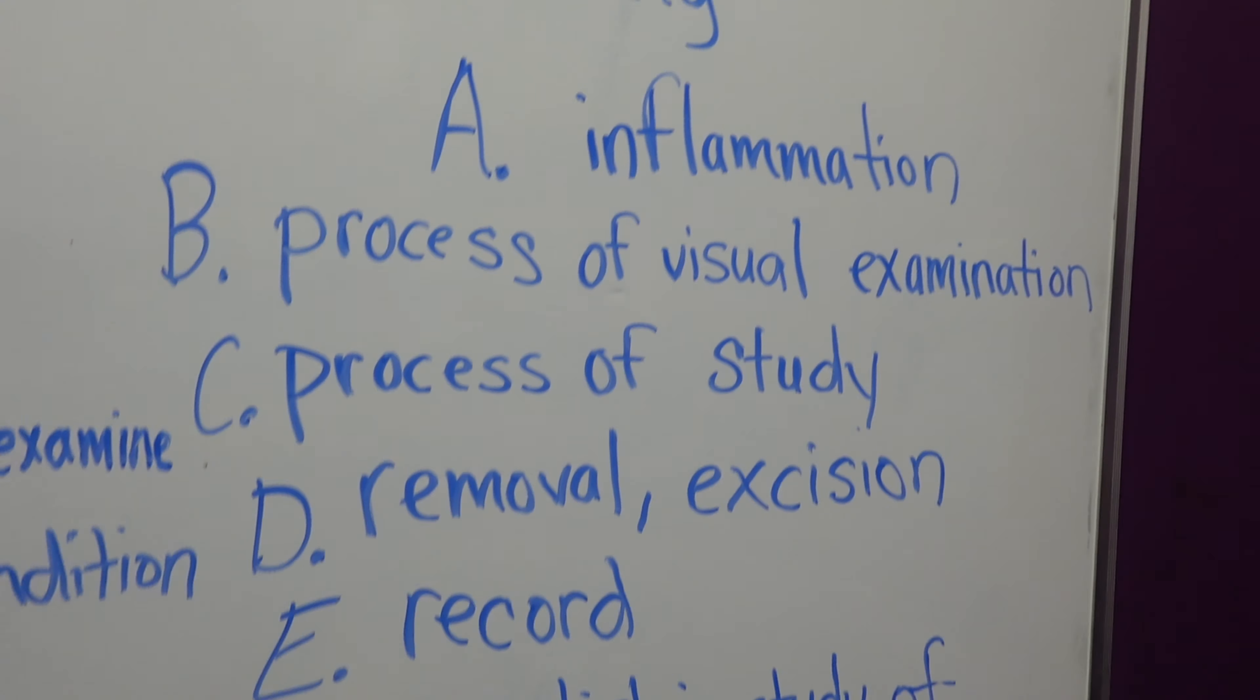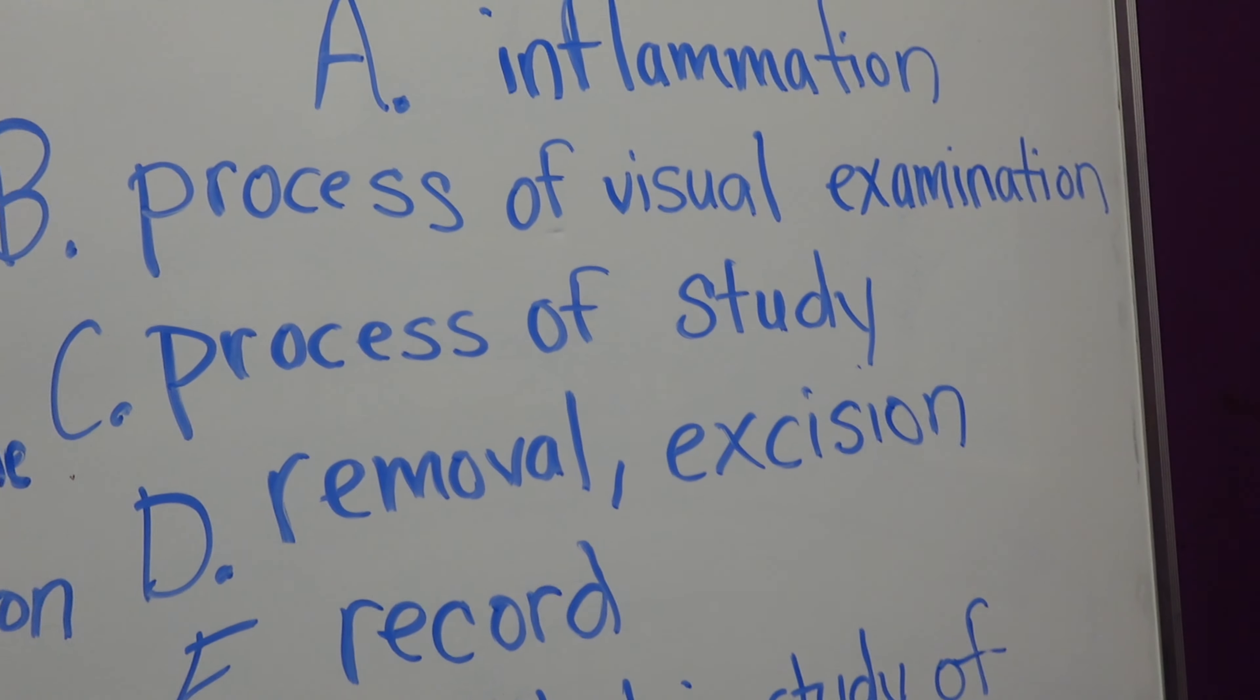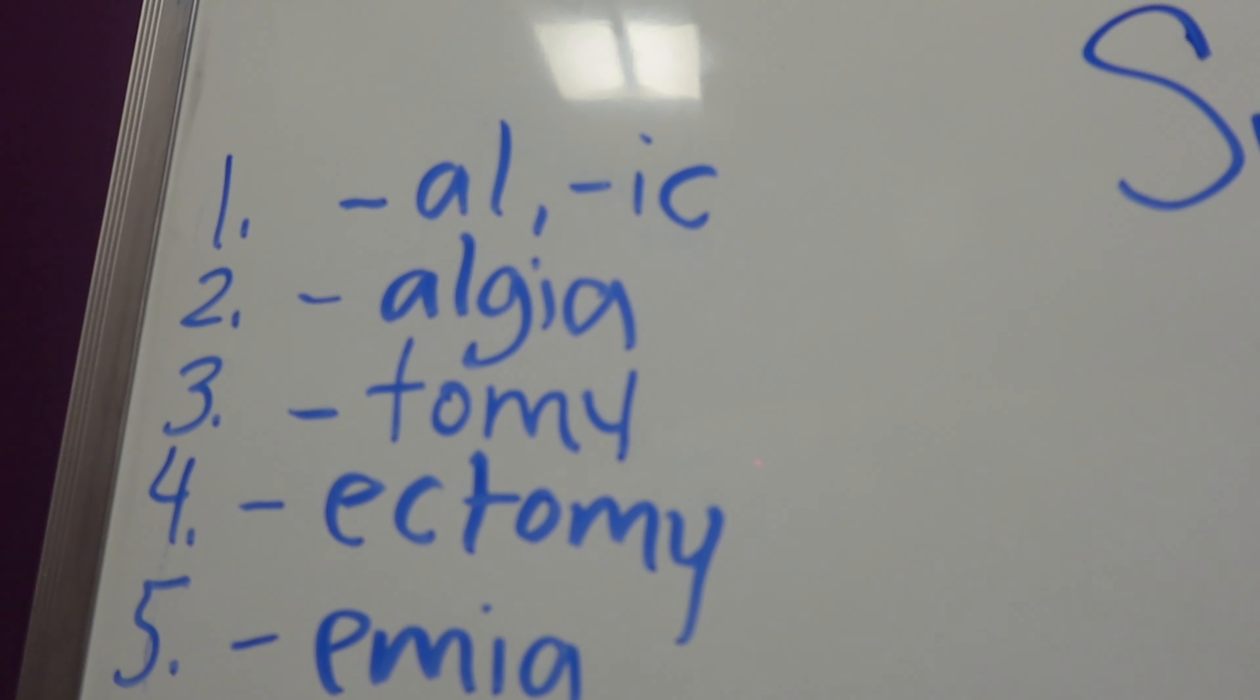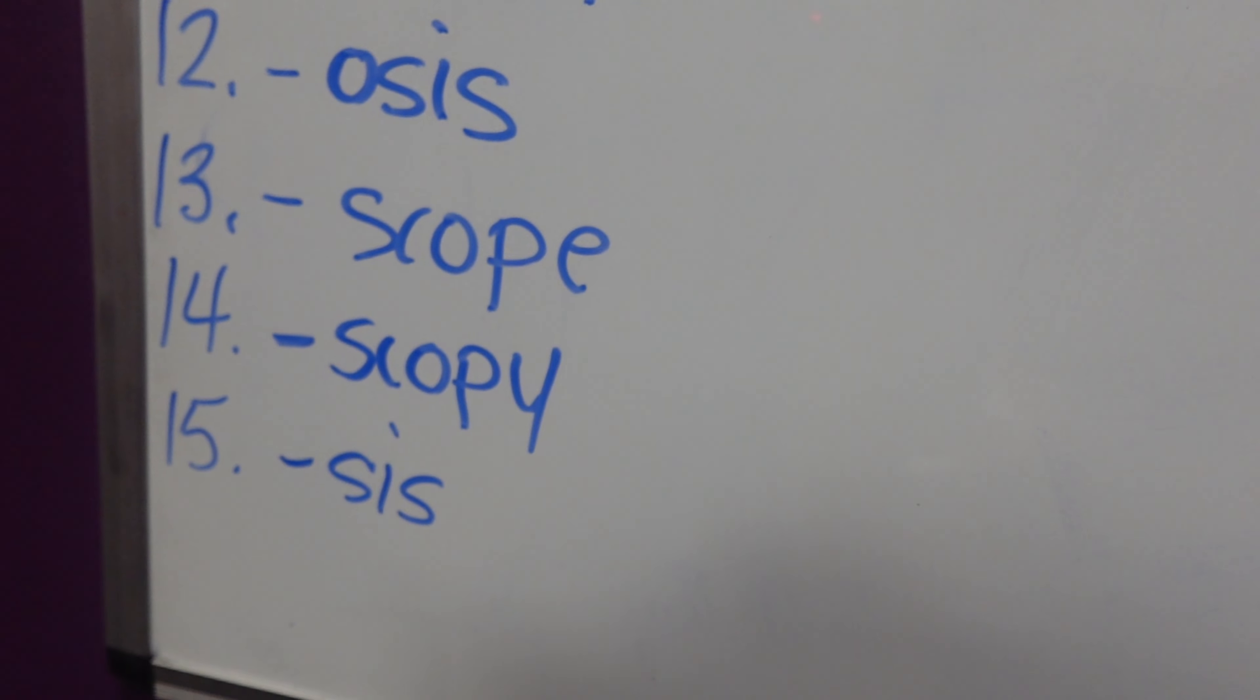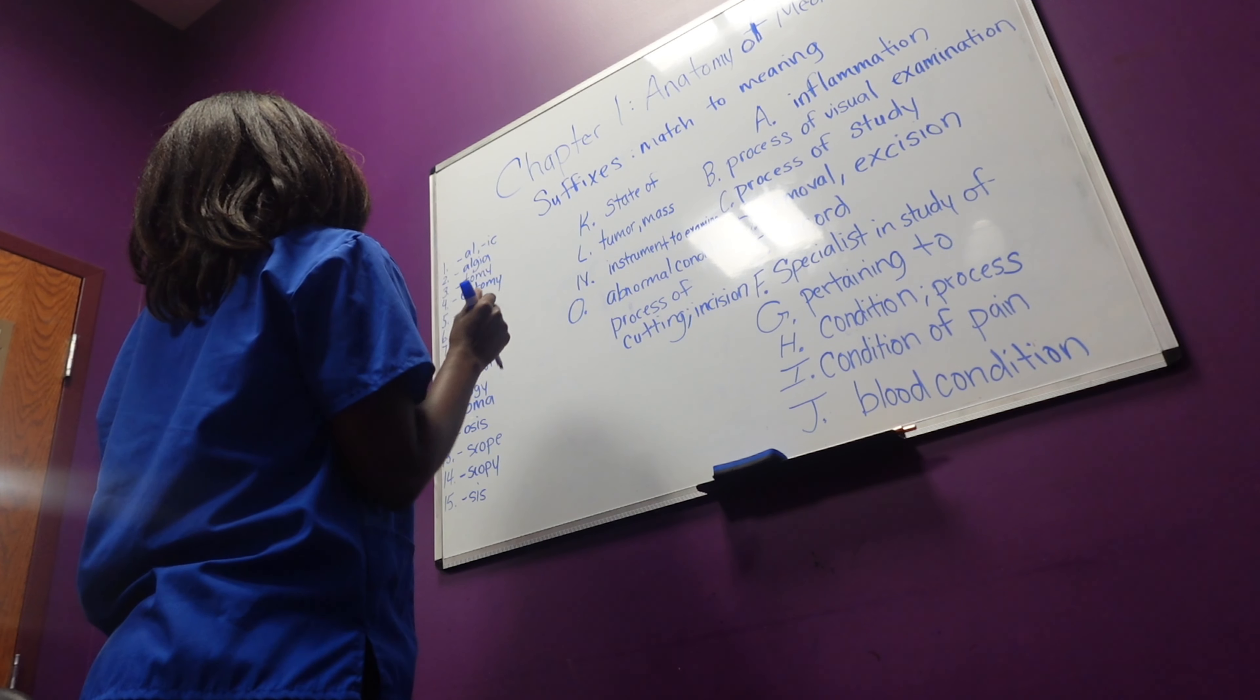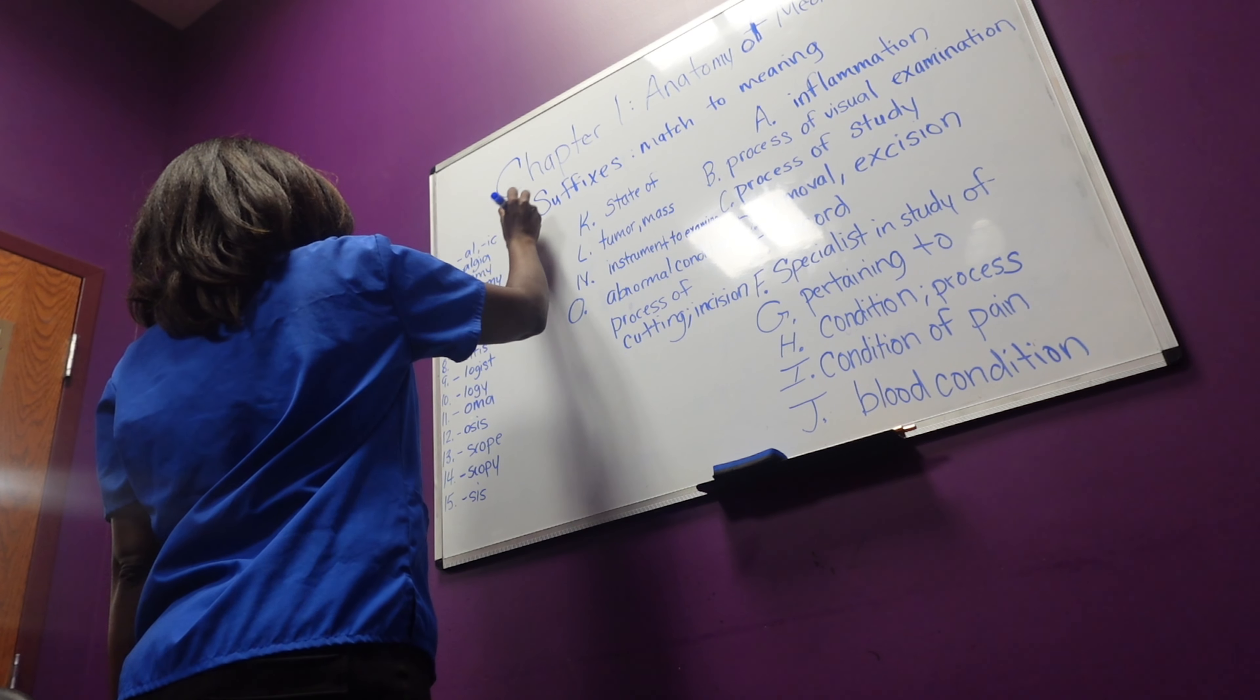Okay, y'all. So this is what I meant. On this side I wrote down the answer choices. And these are the questions, the suffixes. 15 suffixes and 15 letters that I have to match each one with. I have IC that means pertaining to, so I know it's G.